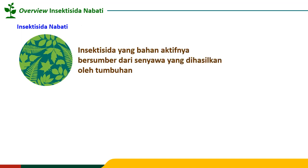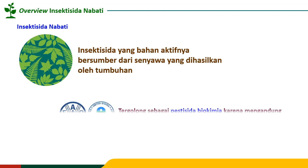Kita mulai dengan definisi. Insektisida nabati adalah insektisida yang bahan aktifnya bersumber dari senyawa yang dihasilkan tanaman. Berbeda dengan konsep pengendalian hayati di video learning sebelumnya, di mana kita memanfaatkan organisme hidup untuk pengendalian hama. Dalam hal ini kita hanya memanfaatkan senyawa yang dimiliki oleh tumbuhan tertentu yang memiliki kemampuan untuk mengendalikan populasi hama.